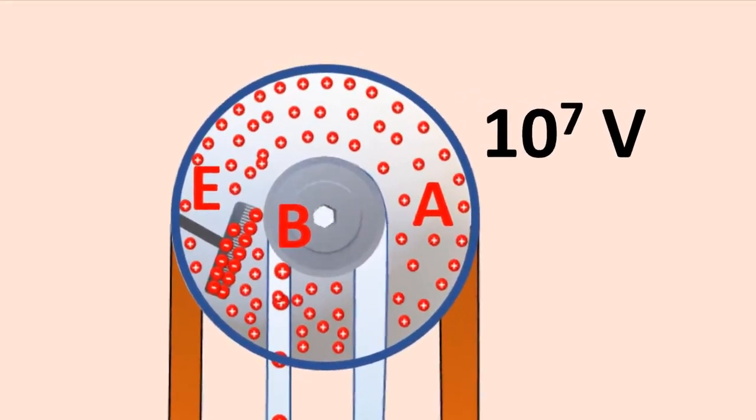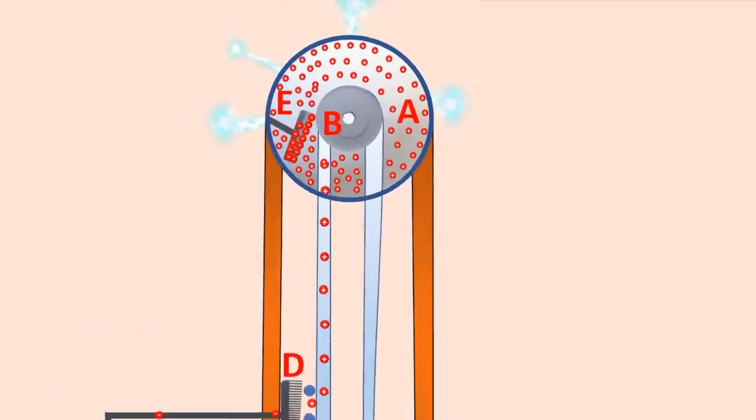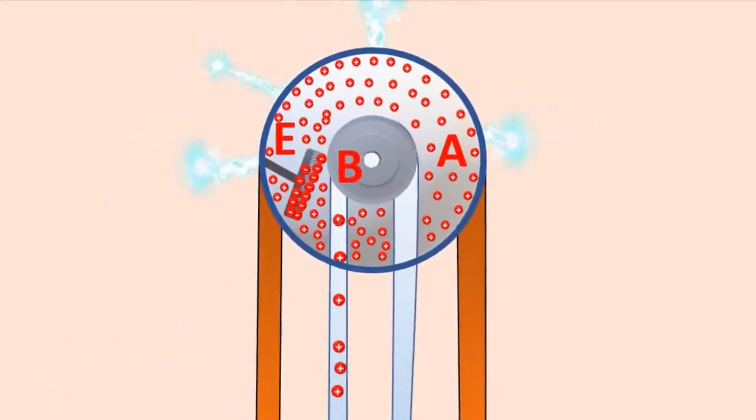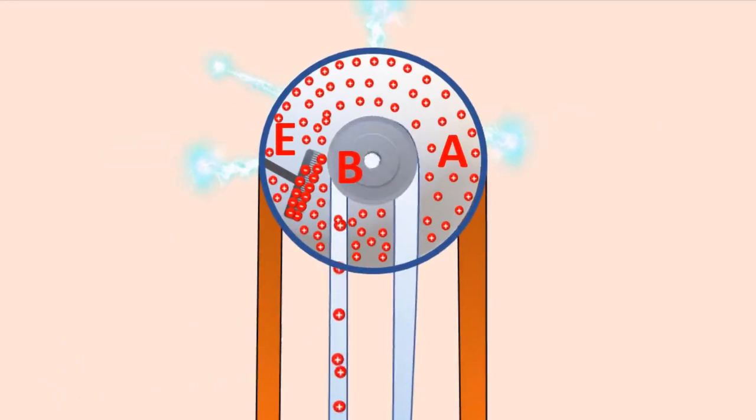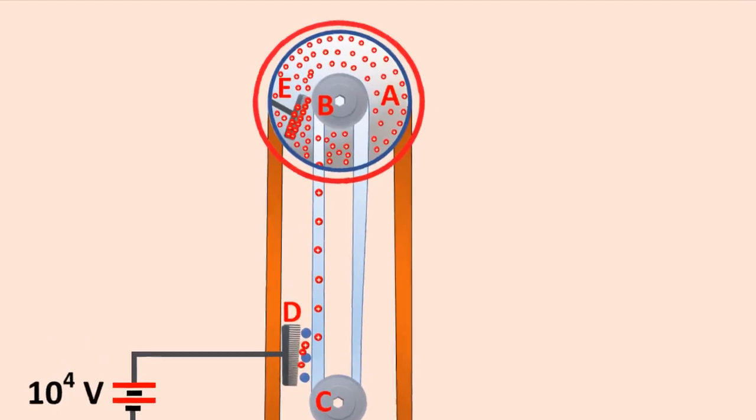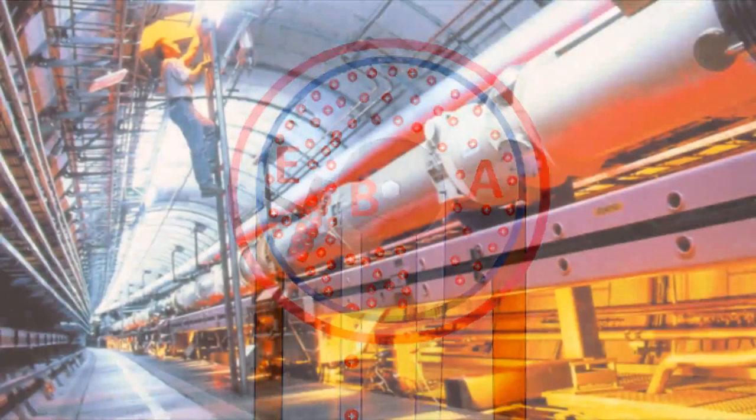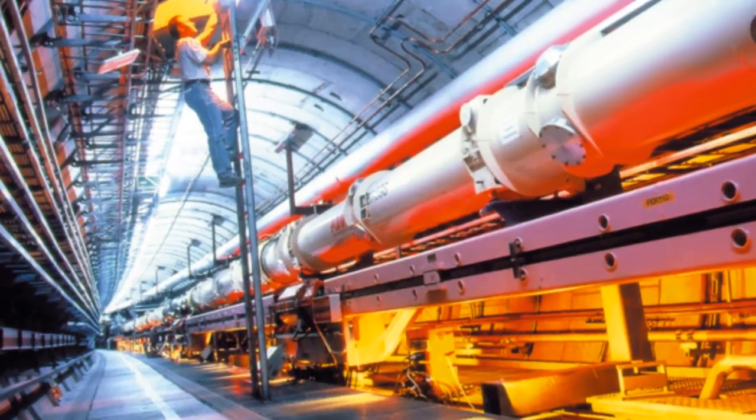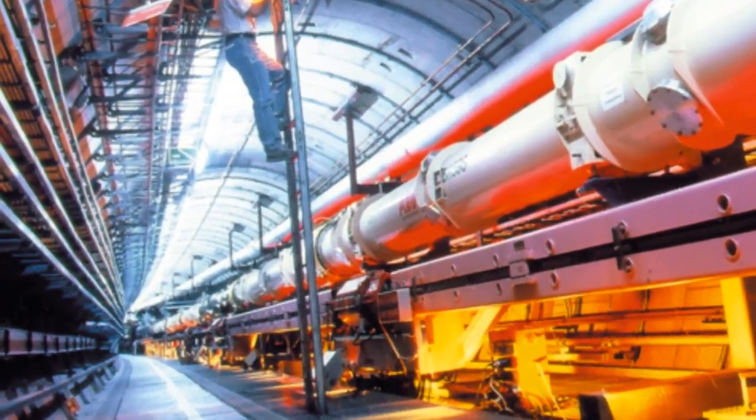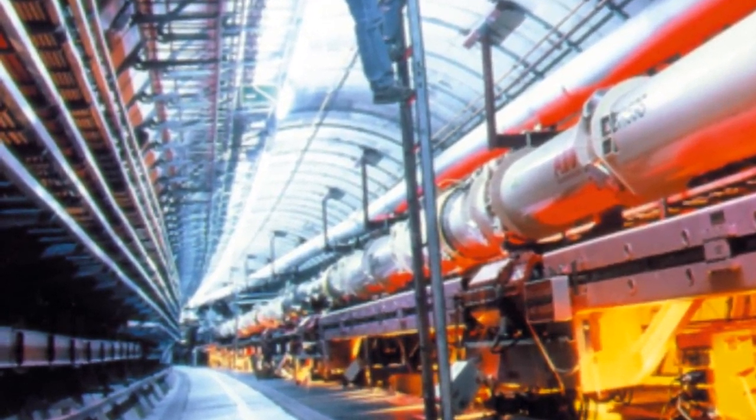We cannot store charges beyond this limit, since the extra charges start leaking to the surroundings due to the ionization of air. The leakage of charges can be reduced by enclosing the machine in a gas-filled steel chamber at very high pressure. The high voltage produced in Vandegraaff generator is used to accelerate positive ions for the nuclear disintegration and other applications.